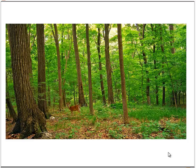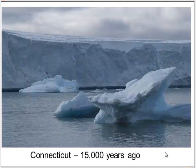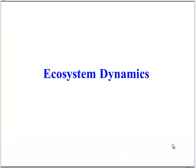This is a picture of a forest in Connecticut today, but 15,000 years ago, this is what Connecticut looked like. How was our habitat able to change so much, and what will Connecticut look like in the future? Those are questions we're going to explore in this video on ecosystem dynamics. Let's start with the process that makes ecosystems change over time. This is called succession.